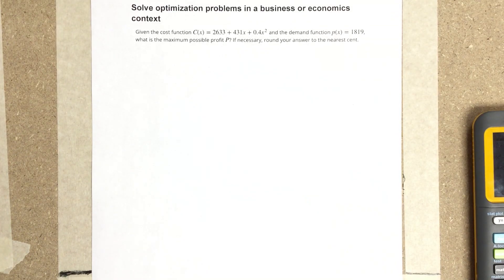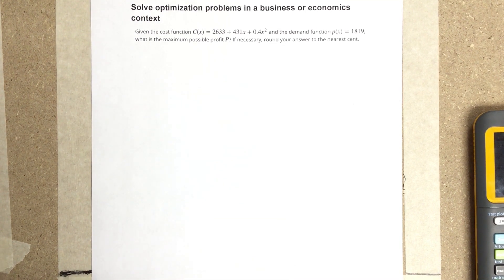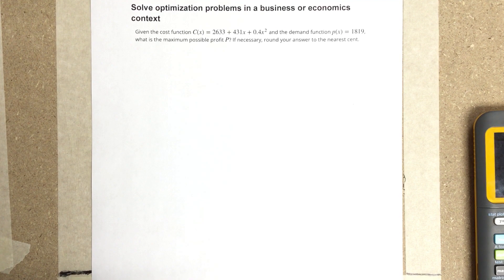In this video, we're going to solve optimization problems in a business or economics context. Given the cost function C(x) = 2,633 + 431x + 0.4x², and the demand function P(x) = 1819, what is the maximum possible profit? If necessary, round your answer to the nearest cent.